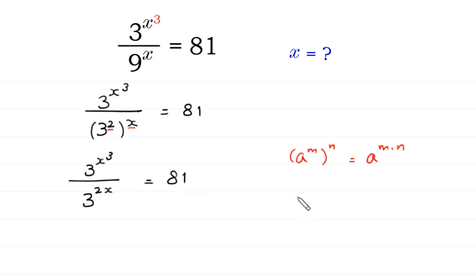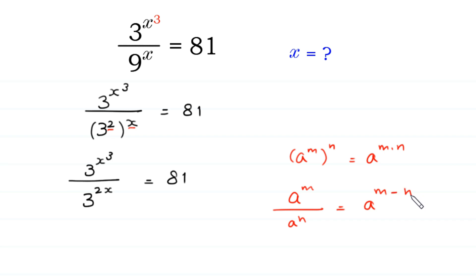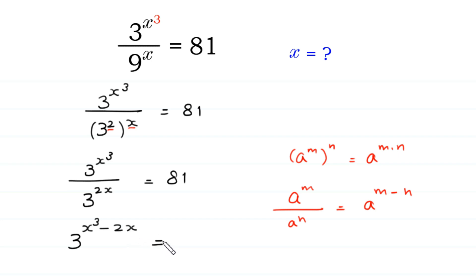According to the property of exponents, a to the power m over a to the power n is equal to a to the power m minus n. We can write this 3 to the power x cubed over 3 to the power 2x as 3 to the power x cubed minus 2x, equal to — we can write this 81 as 3 to the power 4.